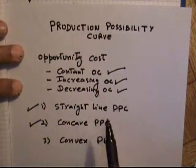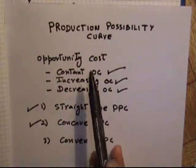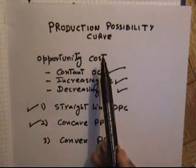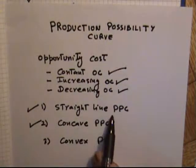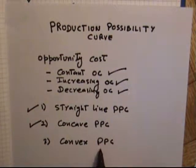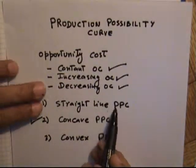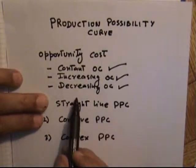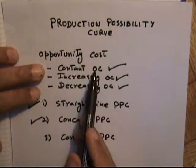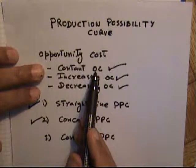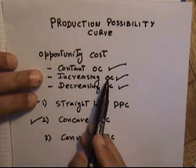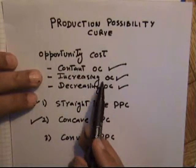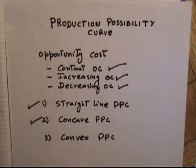In this lesson, we have understood the concept of the Production Possibility Curve. There are three types: straight line, concave, and convex. The straight line production possibility curve is due to constant opportunity cost, and the concave production possibility curve is due to increasing opportunity cost. That's all in this lesson. Thank you very much.